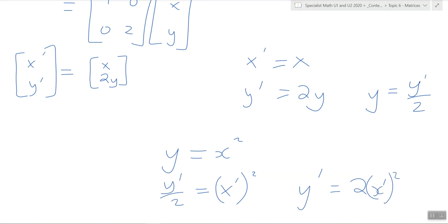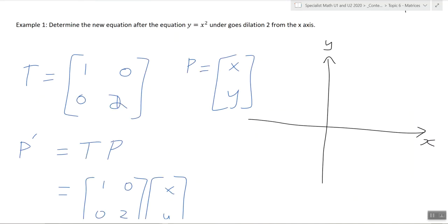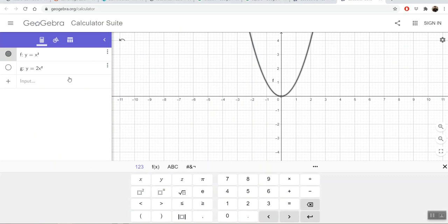So y dash equals 2x dash squared. So that's dilated away from x. It's moved away from x by 2x. So visually it looks like this. This was the original function here, and it's moved away from the x-axis to this new function here, g.